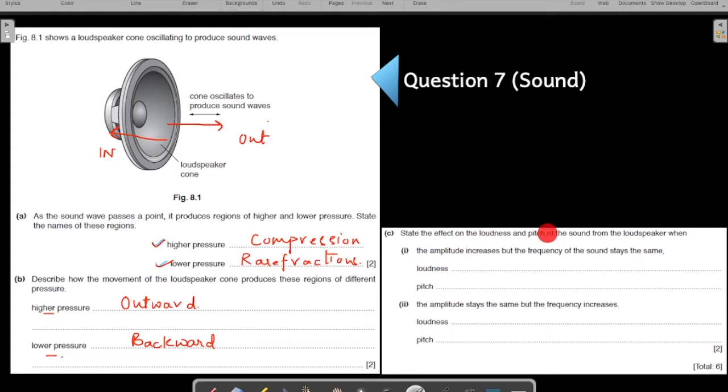Part C: State the effect on the loudness and the pitch of the sound from the loudspeaker when amplitude increases but the frequency stays the same. Again and again these kind of questions are coming. Amplitude increases means loudness is more or it increases. Pitch stays the same. Similarly second part: amplitude stays the same but the frequency increases. Amplitude stays the same means loudness stays the same and the frequency is increasing, so the pitch will be more.